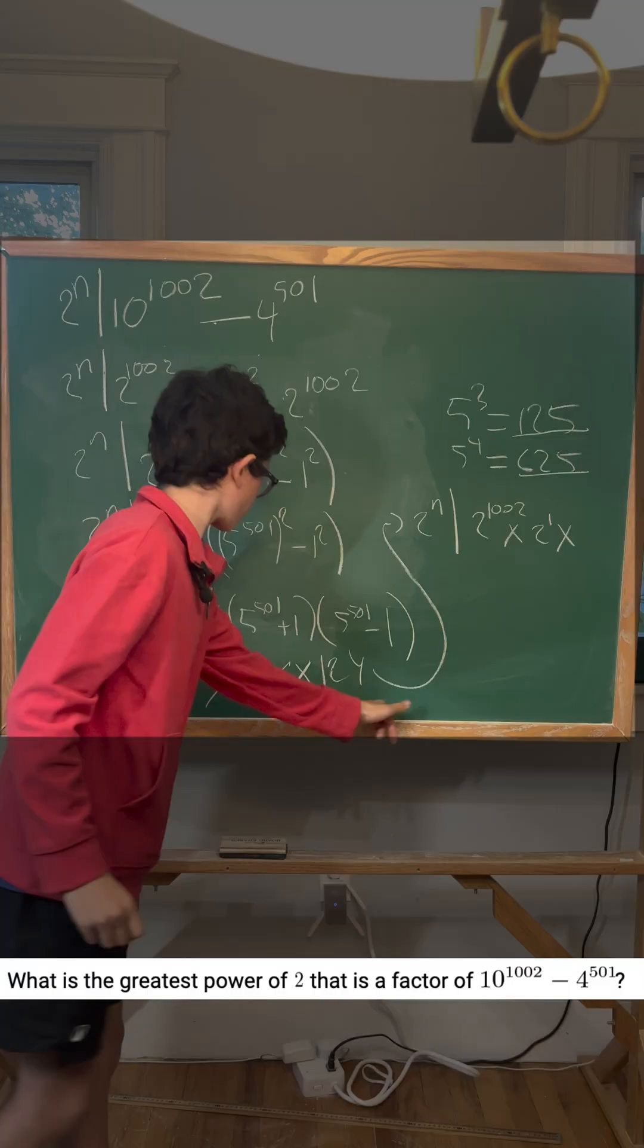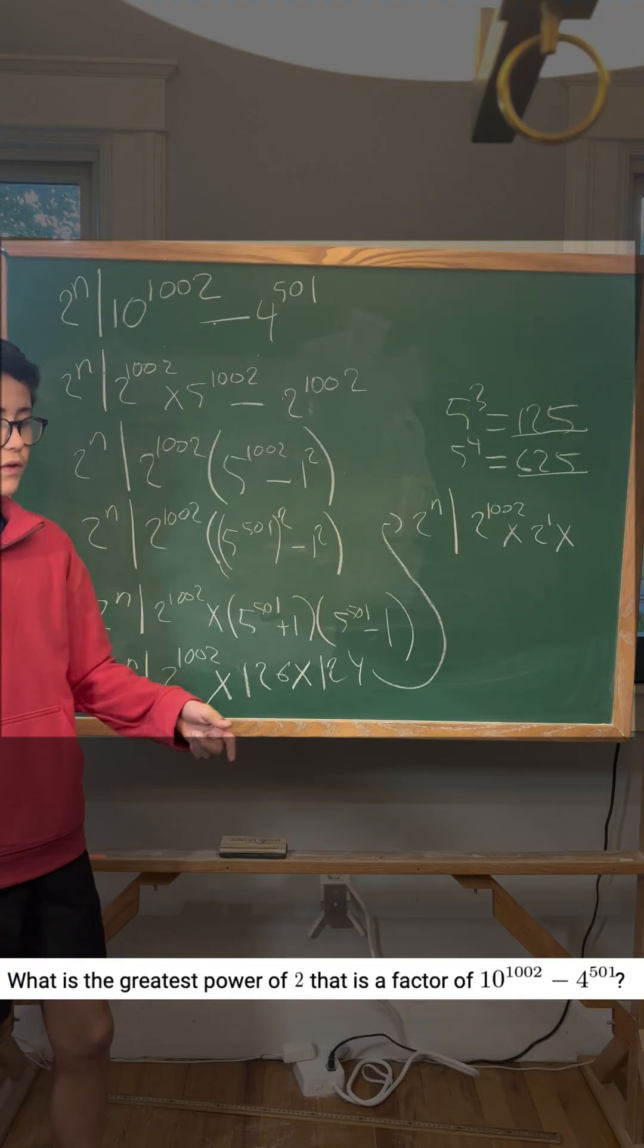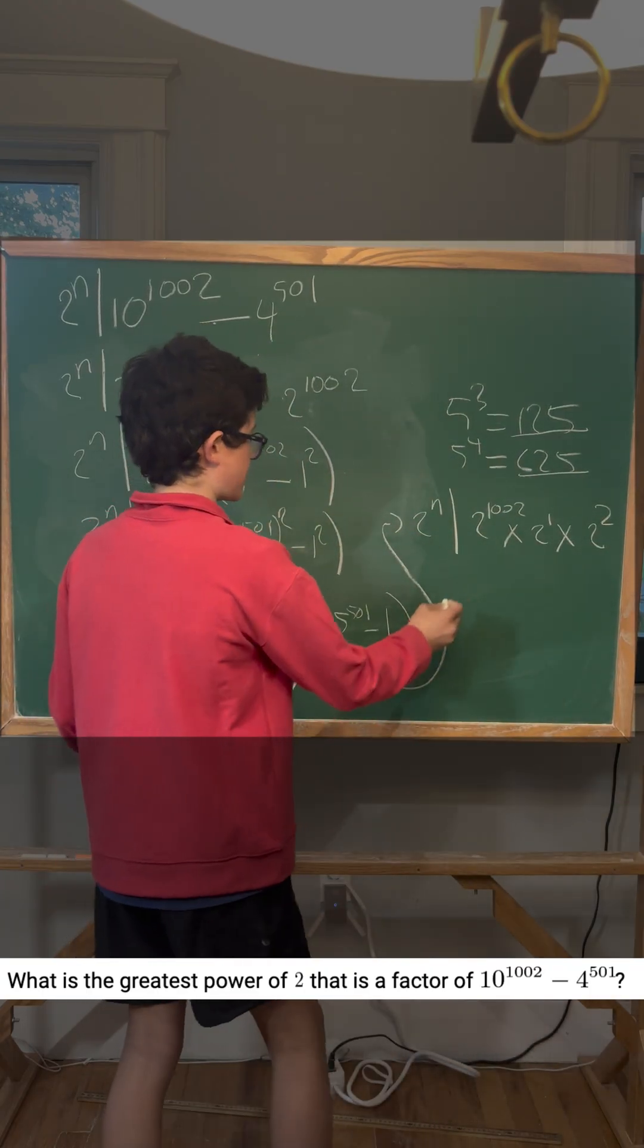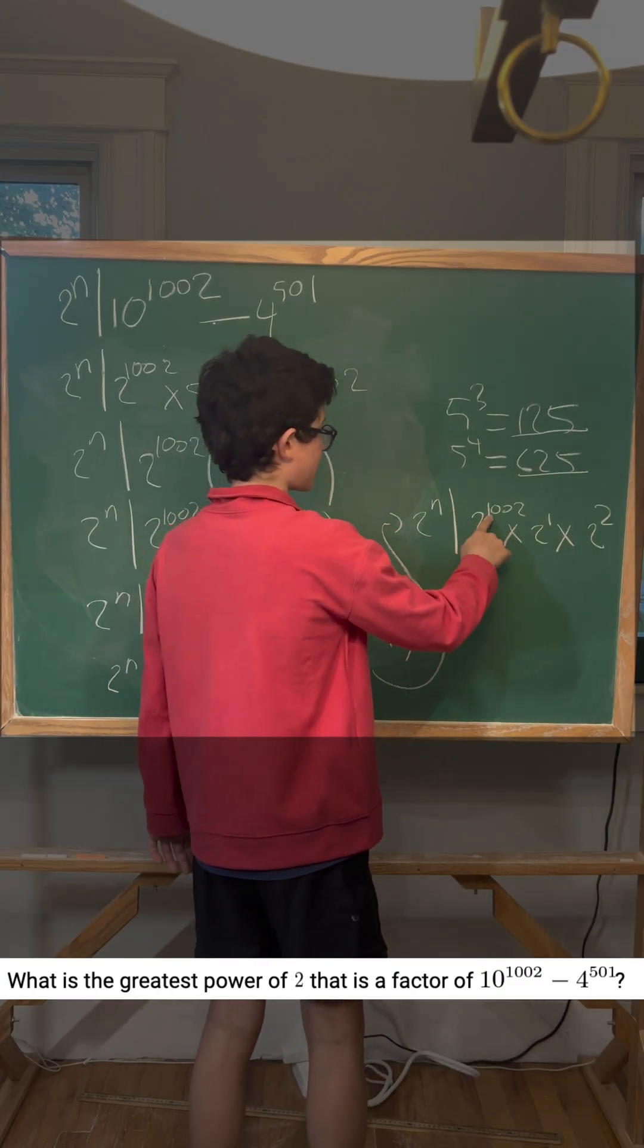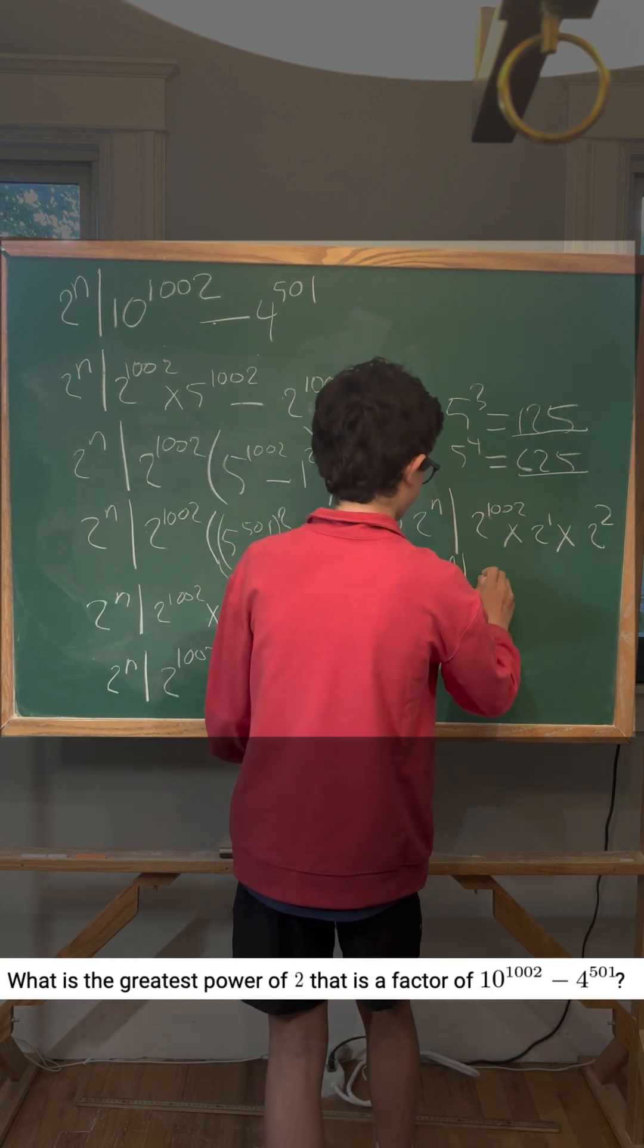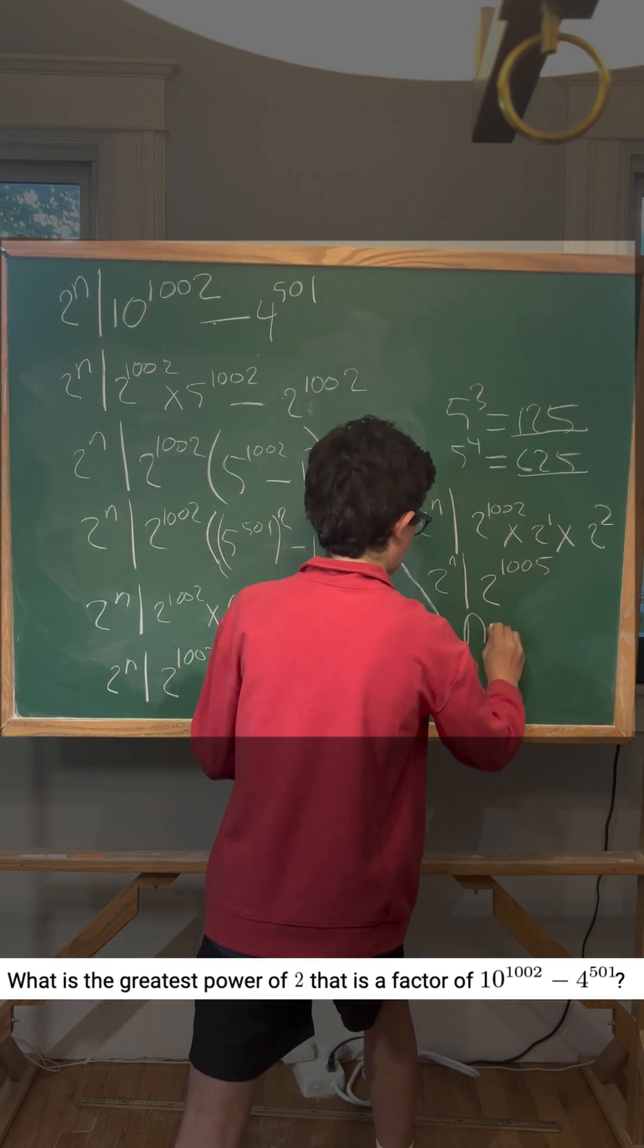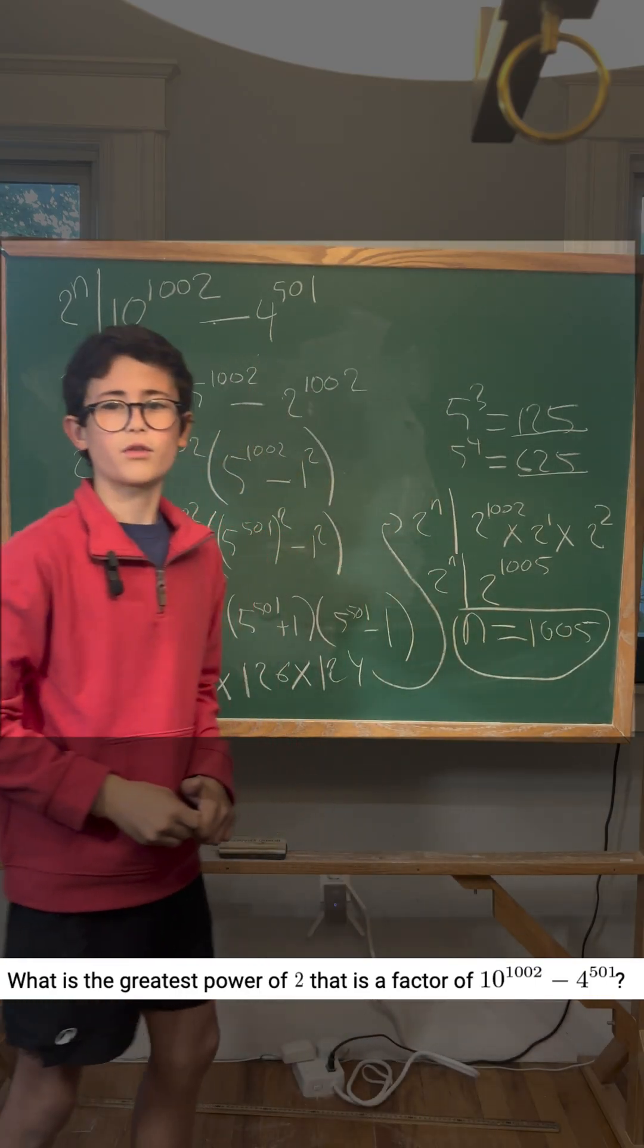Times, we do the same thing for 124. So 124 is divisible by 2^1, but it's also divisible by 2^2, but nothing beyond that. So we just write 2^2. So these three terms have the same basis, so we can add their exponents as 2^n divides 2^(1002+1+2), so 2^1005. So that means that n equals 1,005, so 1,005 would be our answer.